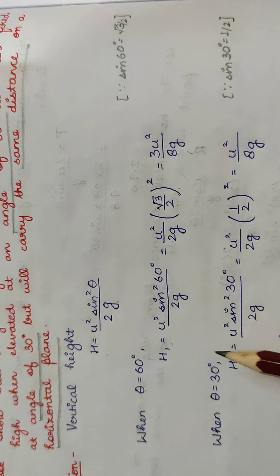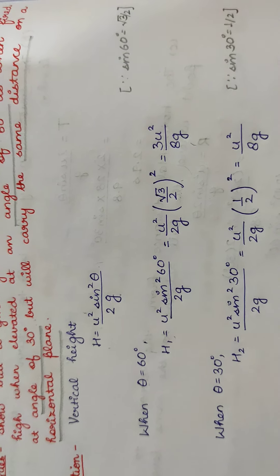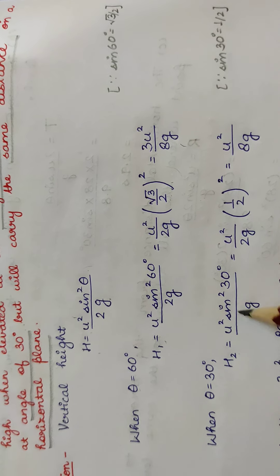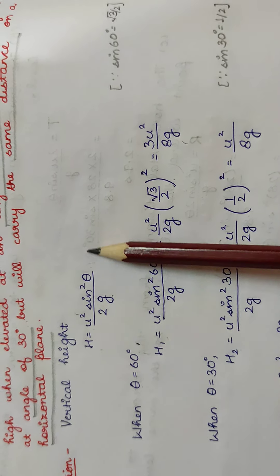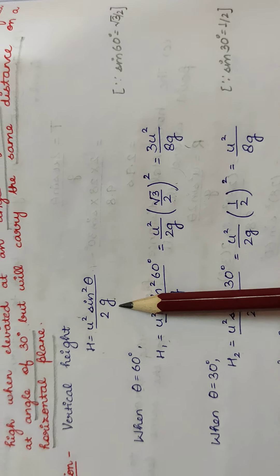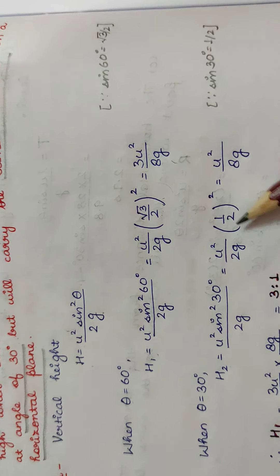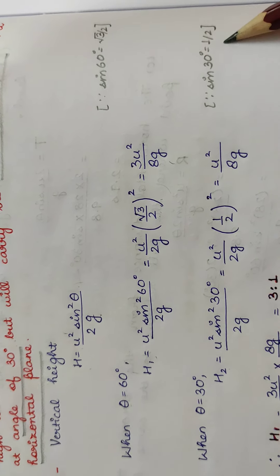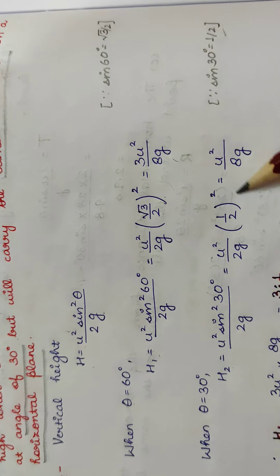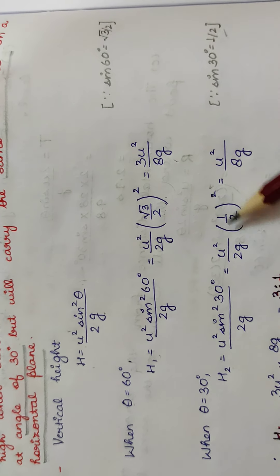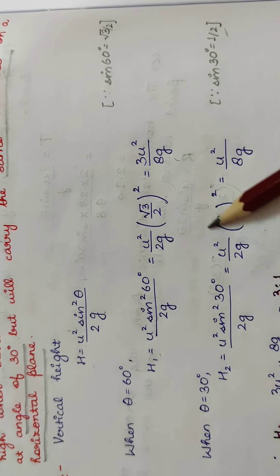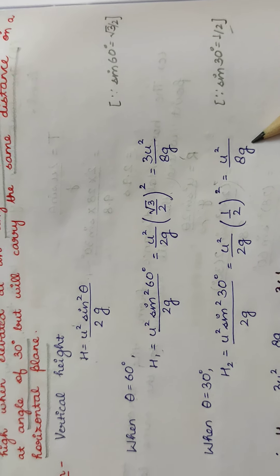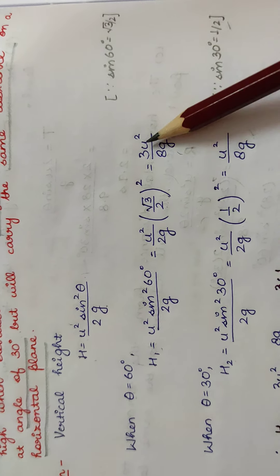For θ = 30°, the vertical height is H2. Since sin 30° = 1/2, squaring gives 1/4, and solving we get H2 = u² / 8g.